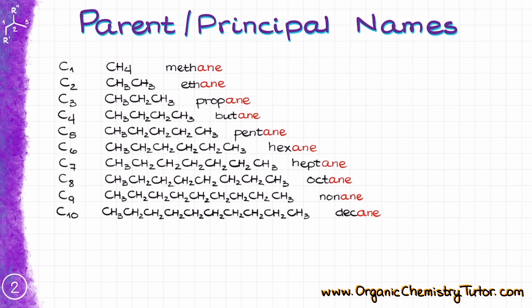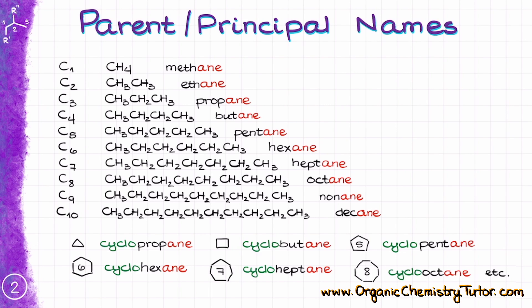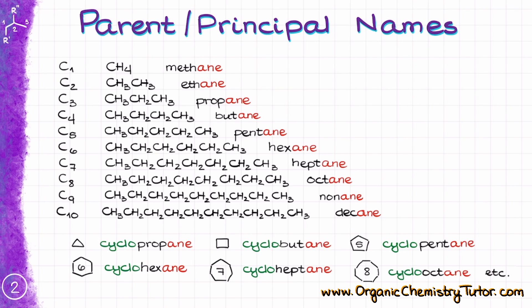All these are open-chain molecules. So how do we name the cyclic alkanes? It's actually very similar. For the cycloalkanes, you'll just add the prefix cyclo to the name of the molecule, which signifies that this is a ring. For instance, for the three-membered ring, I have cyclopropane, or for the five-membered ring, I have cyclopentane, and so on. Any of the names on the list, you can stick cyclo in front of it, and that's going to make a cyclic compound instead.